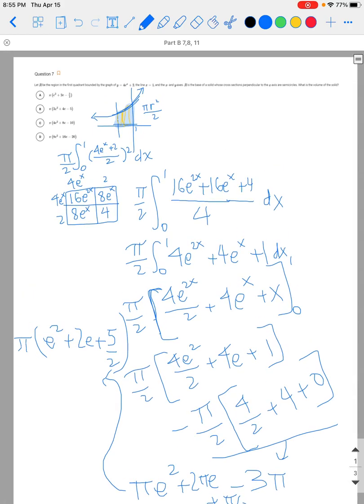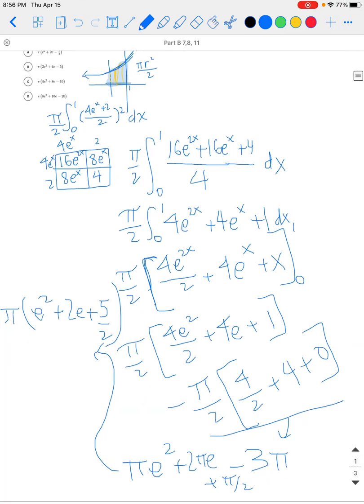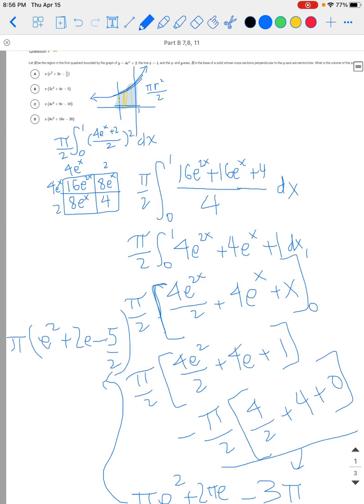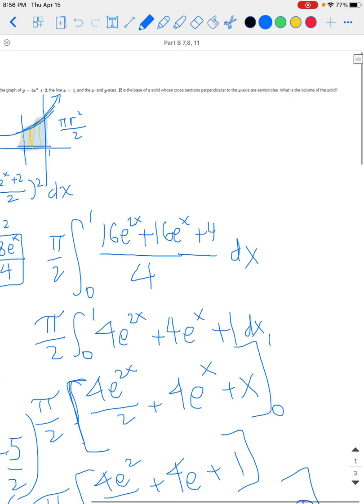Let's see which answer choice that would be. I'm sorry, it was supposed to be minus 5 halves right here. And so let's see what answer choice that would be. And that would be A.